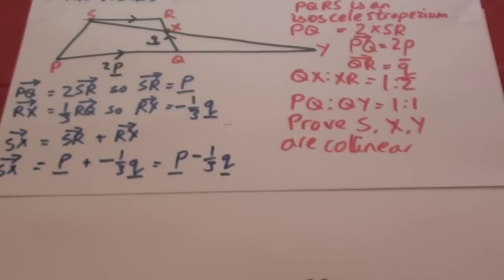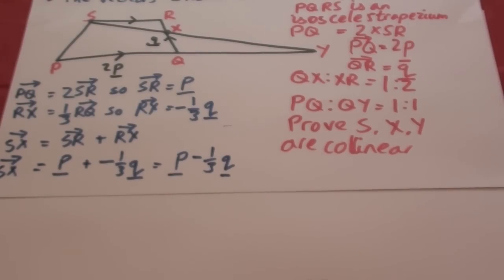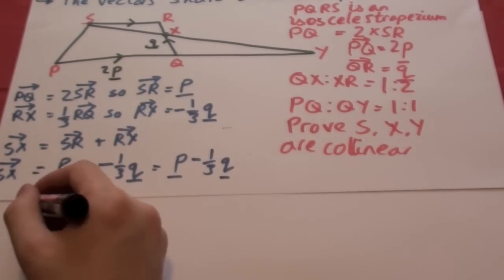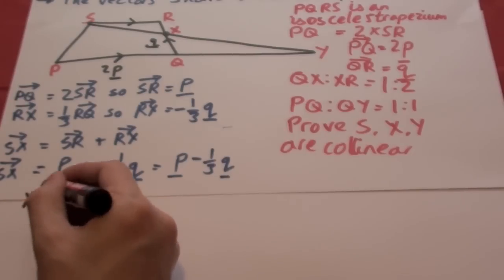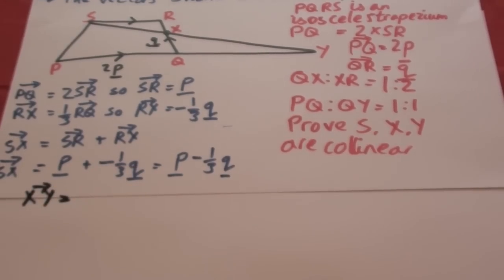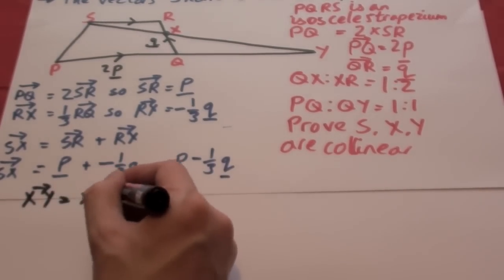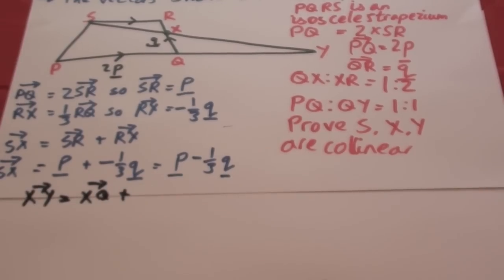Now we're going to work out X to Y. So here's X to Y. That is equal to X to Q, first of all, plus Q to Y.